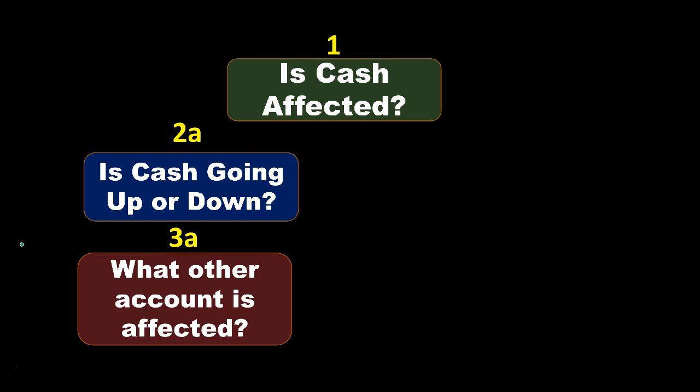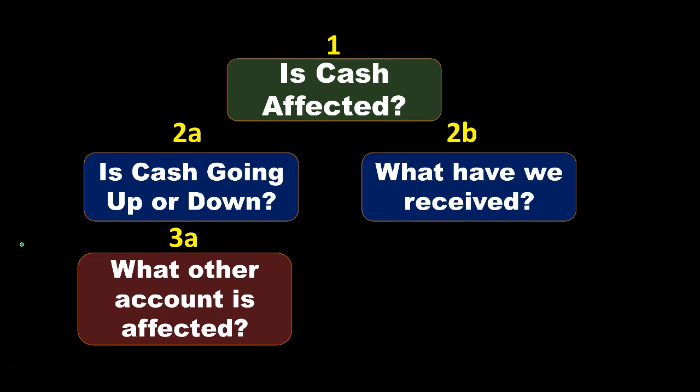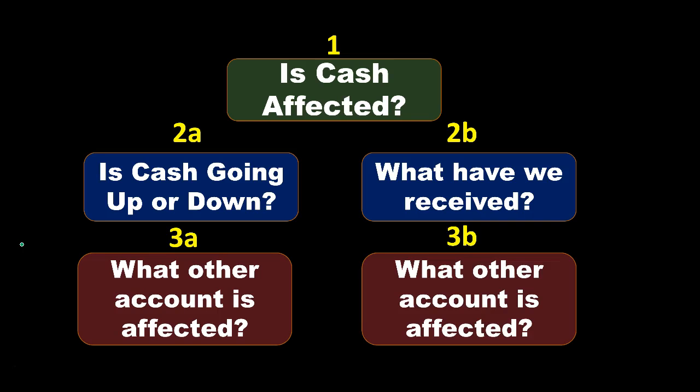If cash is not affected, the second question is: what have we received? Cash won't be affected about 25% of the time, but the majority of transactions will have a cash component. When it doesn't, it's often easier to think about what we received — like an IOU if we sold something on account, or an asset or expense we incurred. If we think about that first, it's often an asset or expense, similar to cash, so it's easier to know if it's going up or down. Once we know that account and that it's going up because we received it, we can determine what other account is affected and use that to create the second part of the transaction.